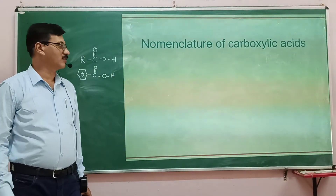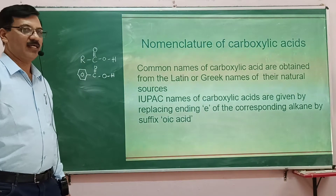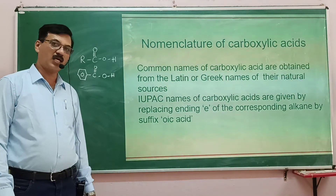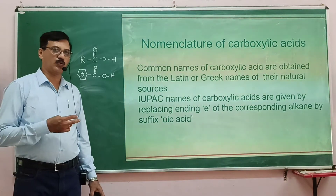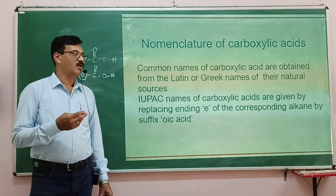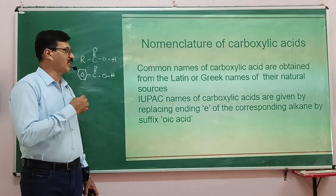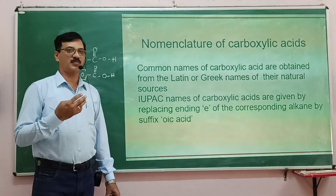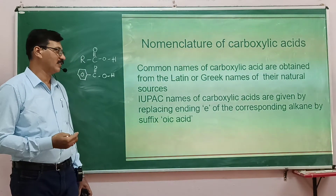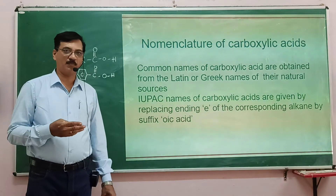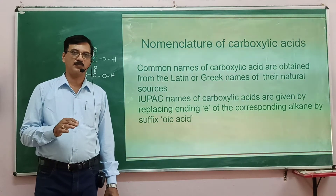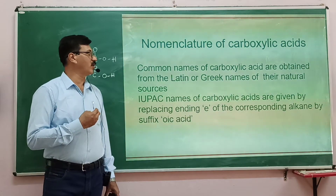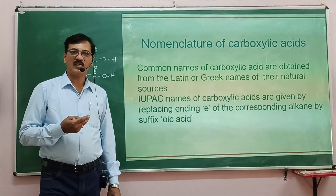Now let us look at the nomenclature of carboxylic acids — that is, the naming of organic compounds. There are normally two types of names: trivial (common) names, which are derived from either Greek or from the natural sources of the compound, and IUPAC names, which are internationally accepted and used by organic chemists.